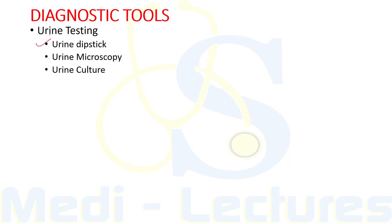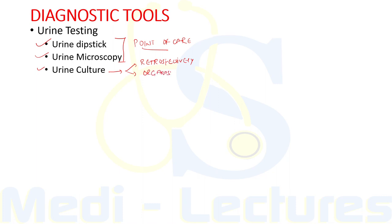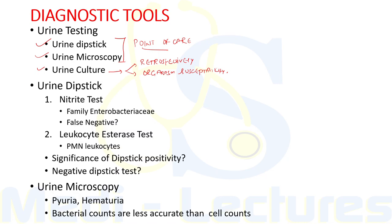Other useful diagnostic tools include urinary testing: urine dipstick tests, urine microscopy, and urine culture. Urine dipstick and microscopy provide point-of-care information, while urine culture retrospectively confirms the diagnosis of UTI and shows the organism's susceptibility to antibiotics. There are two urine dipstick tests: the nitrite test, which relies on members of the family Enterobacteriaceae converting nitrate to nitrite, and the leukocyte esterase test, which detects this enzyme in polymorphonuclear leukocytes in the host urine whether the cells are intact or lysed.